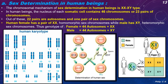Sex determination in human beings follows the XX-XY chromosomal mechanism. The nucleus of each somatic cell contains 46 chromosomes or 23 pairs — 22 pairs are autosomes and one pair are sex chromosomes. The human female has a homomorphic pair of sex chromosomes (XX) where both chromosomes are the same, while the male has a heteromorphic pair (XY) where X and Y differ. Thus the genotype of female is 44 autosomes + XX (total 46) and of male is 44 autosomes + XY (total 46).